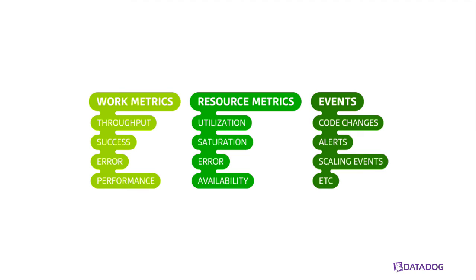Let's go back to that original chart. We've got three buckets: work metrics, resource metrics, and events. Work metrics are really the key thing — the work of the server: the throughput, the success, the errors, and performance.